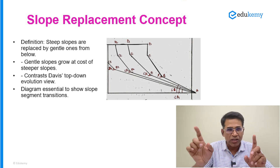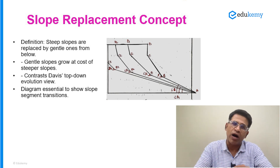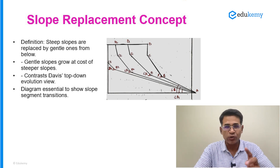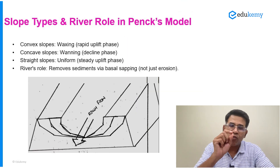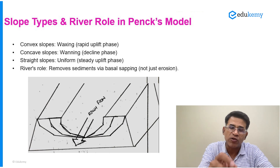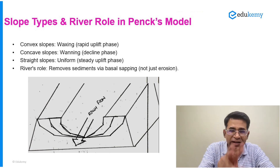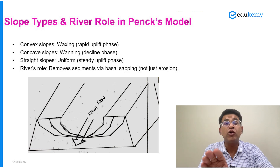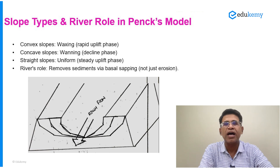Please draw the diagram showing the different segments and how slopes are changing. The second class of slope replacement concerns what Peng tells us about different types of slopes and their reasons. For Davis, the convex slope is a consequence of the youthful stage, the concave slope is a consequence of the senile stage, and straight slopes are related to the stage of maturity.